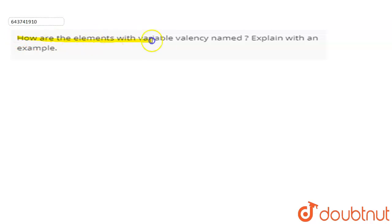Hello everyone, the question is: How are the elements with variable valency named? Explain with an example. So in this question we have to show how elements with variable valency are named and also explain this term with an example. Let's start.